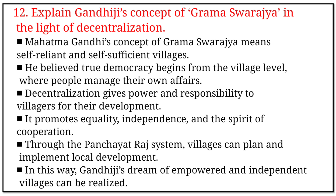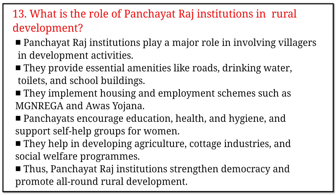12. Explain Gandhiji's concept of Grama Swaraj in the light of decentralization. Answer: Mahatma Gandhi's concept of Grama Swaraj means self-reliant and self-sufficient villages. He believed true democracy begins from the village level, where people manage their own affairs. Decentralization gives power and responsibility to villagers for their development. It promotes equality, independence, and the spirit of cooperation. Through the Panchayat Raj system, villages can plan and implement local development. In this way, Gandhiji's dream of empowered and independent villages can be realized.